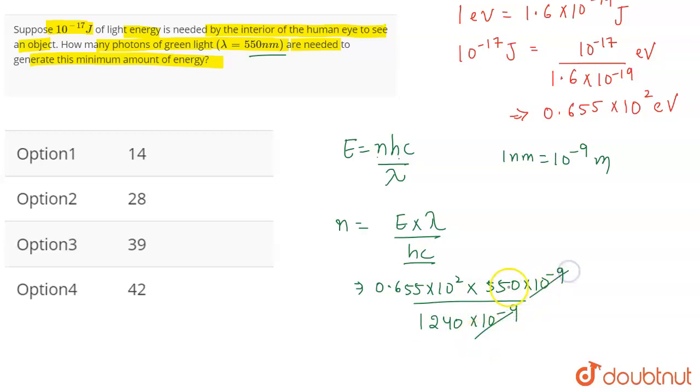So, 10 power minus 9 and 10 power minus 9 will be cancelled. N will be equal to 2.77 into 10, which will be 27.7, which is nearly equal to 28.